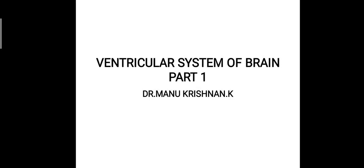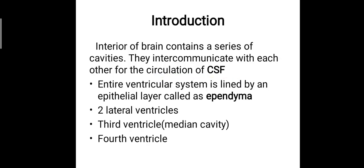Hi everyone, this is Dr. Manu Krishnanki and today we will be discussing about the anatomy of the ventricular system of the brain. There is a particular system of cavities which circulates the CSF in and around the brain. The interior of brain contains a series of cavities which intercommunicate with each other for the circulation of CSF, and that is termed as the ventricular system of brain.